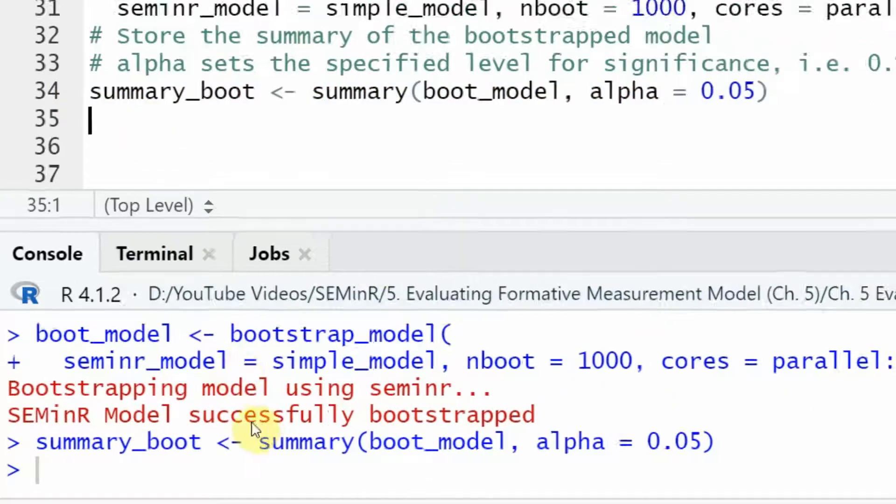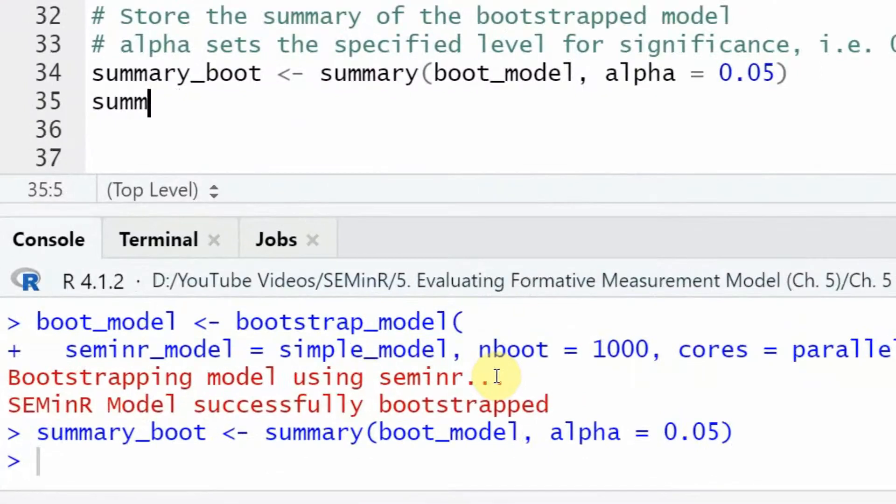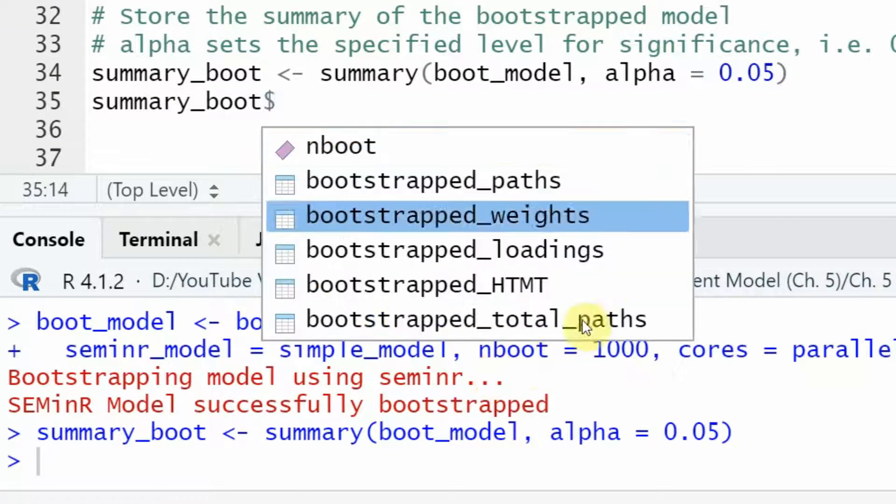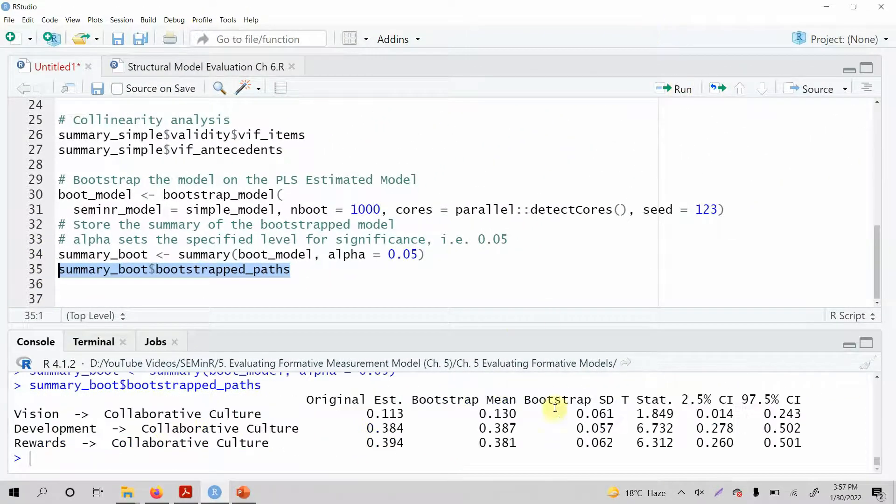What do I want? Let's look at the output. Let's go in and look at the output. Now here is the output. How do you get this output? Summary underscore boot, add the dollar sign. What do you want? I want bootstrap paths. Let's run it.